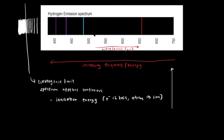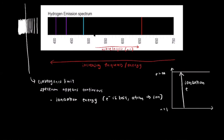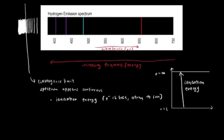In the energy level diagram, the transition corresponding to the ionization energy of hydrogen is an arrow pointing up from the n=1 energy level to the n=infinity energy level. The arrow points up since the electron must gain energy to overcome its attraction to the nucleus. That is it for the hydrogen emission spectrum — feel free to email any questions, and I hope to see you in the next video.